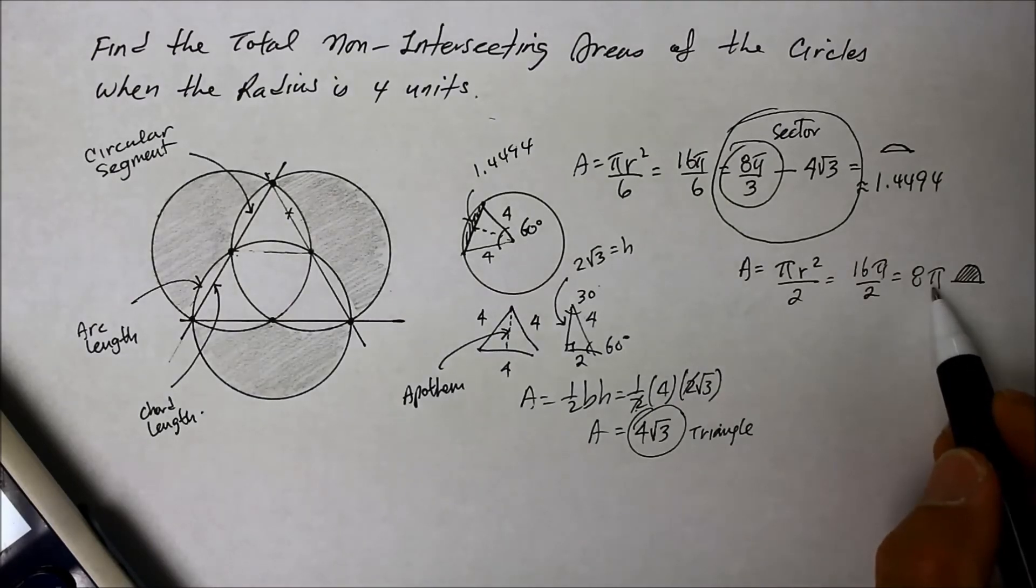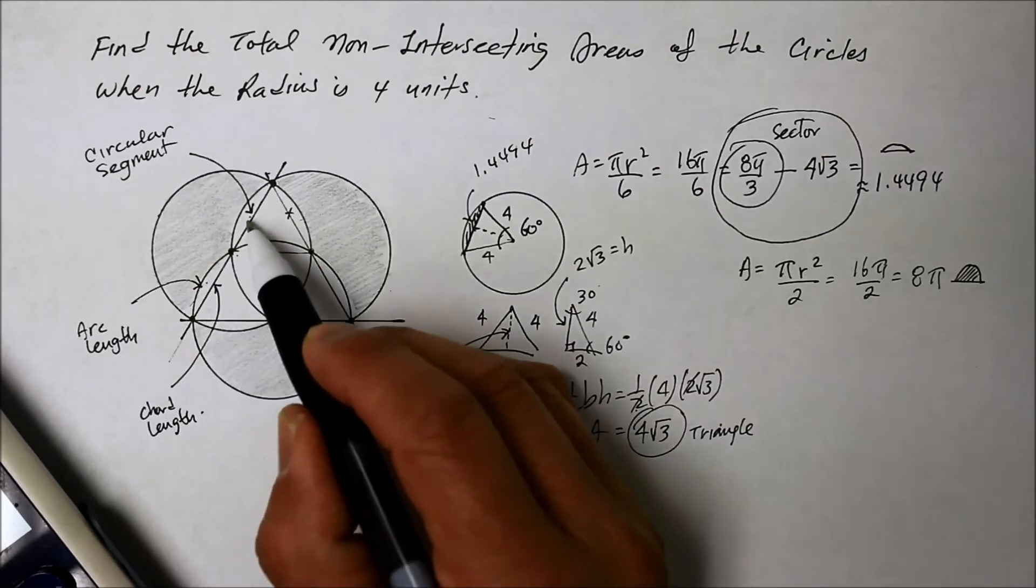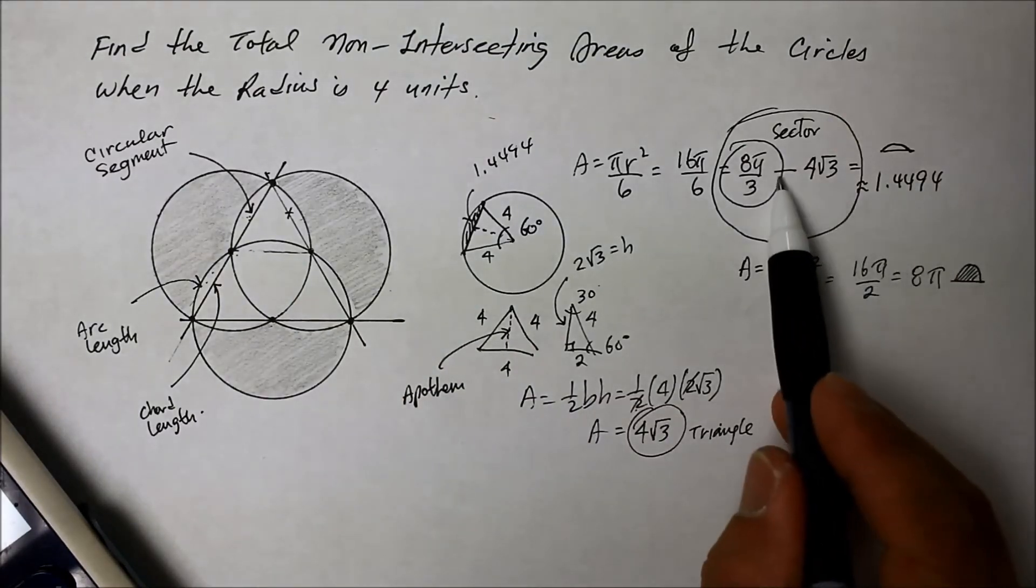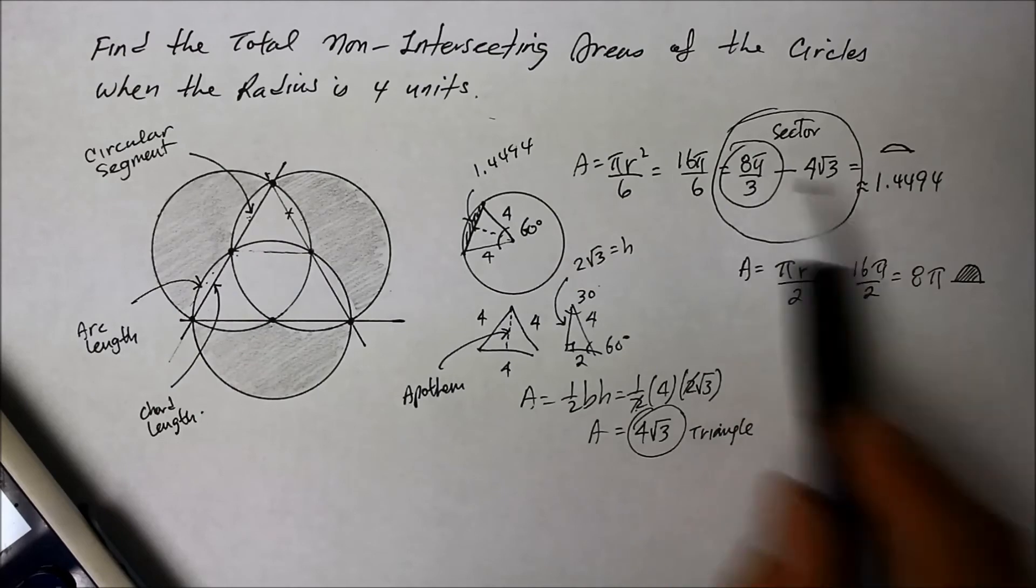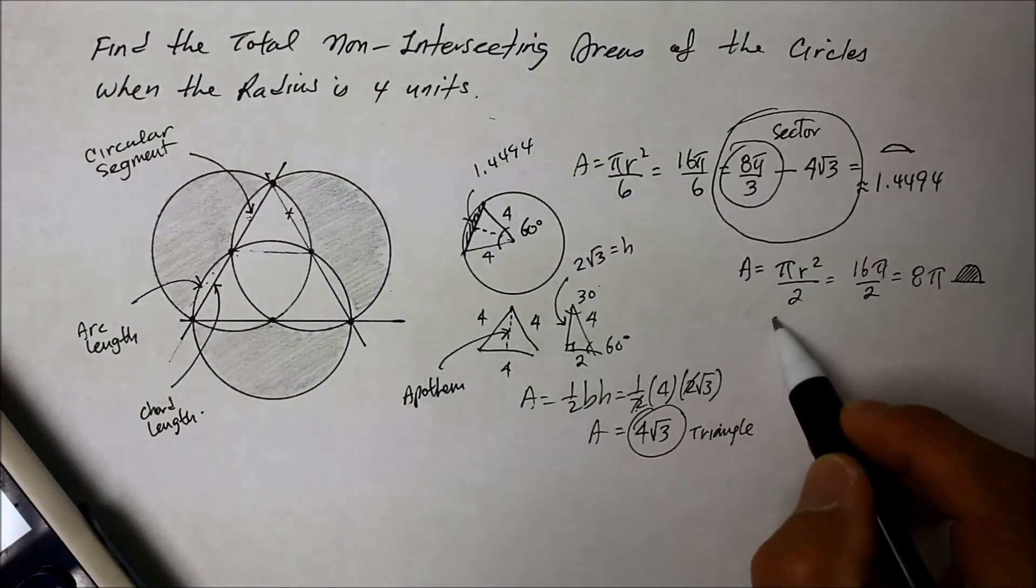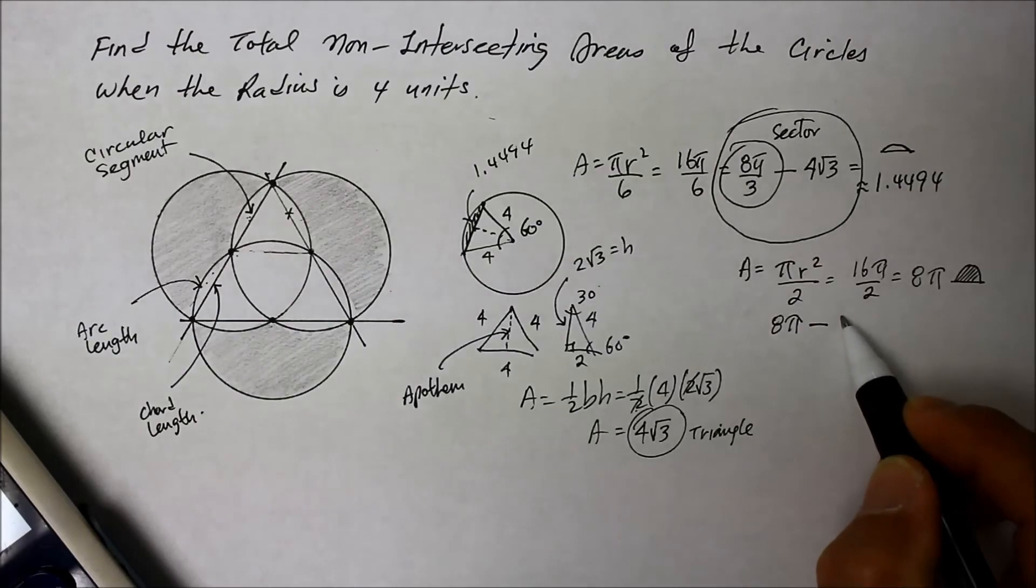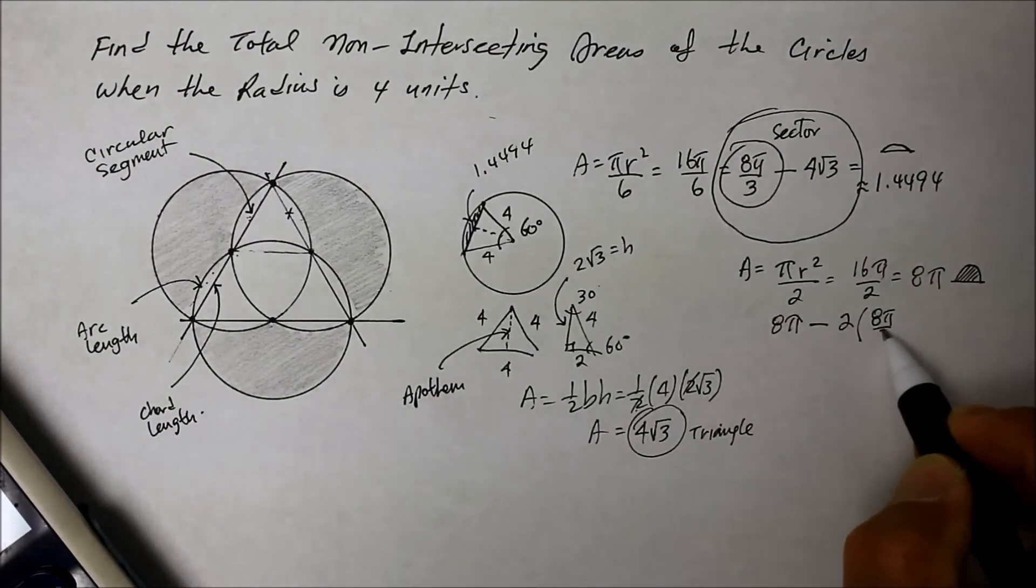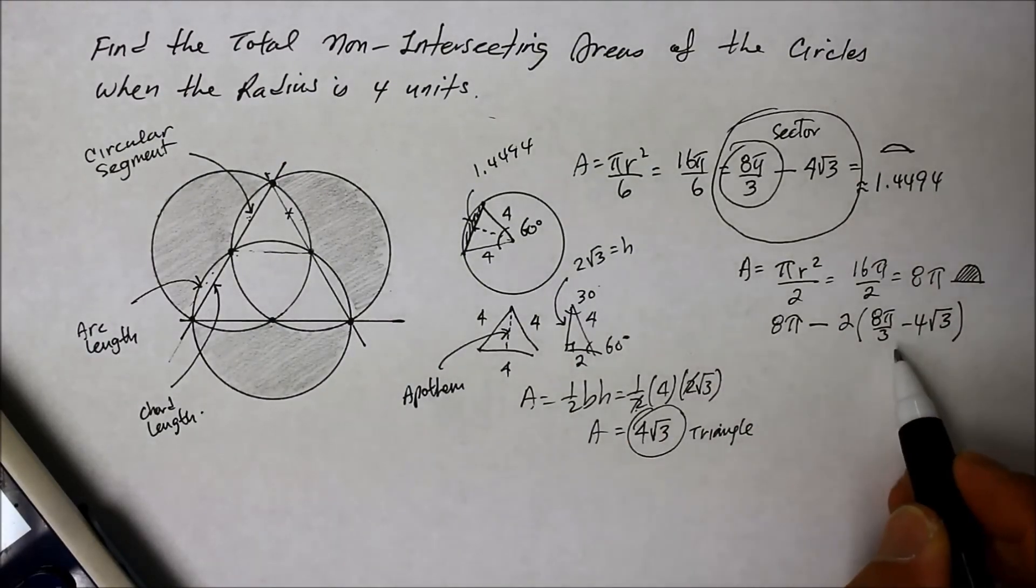Alright. Now, however, I have to take away the two circular segments. See, that is not part of the shaded region here. So we need to take away two of those from there. So that's going to be 8 pi minus twice the circular segment, which is 8 pi over 3 minus 4 square root of 3. Are you confused yet?